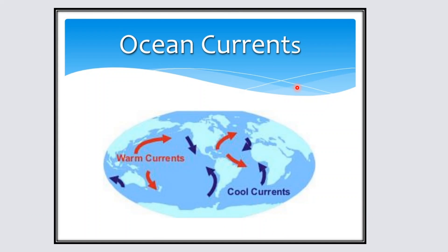Ocean currents also play a very important role in determining the temperature of a place. Warm and cold ocean currents affect the coastal areas along which they flow. Warm ocean currents flowing from the equatorial areas to the polar areas tend to make the climate of neighbouring coastal areas warmer, while cold ocean currents coming from the polar areas tend to decrease the temperature of areas even in the tropical region.